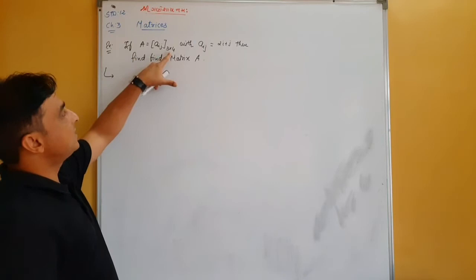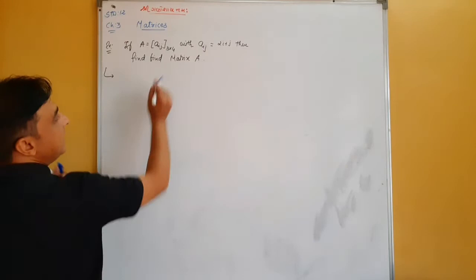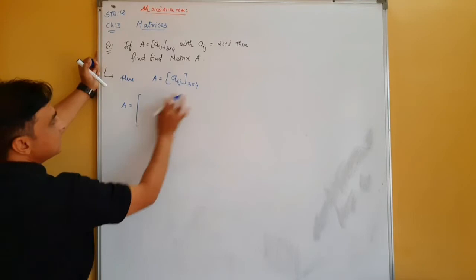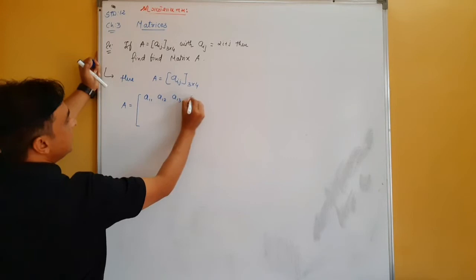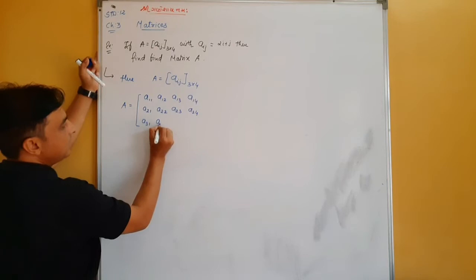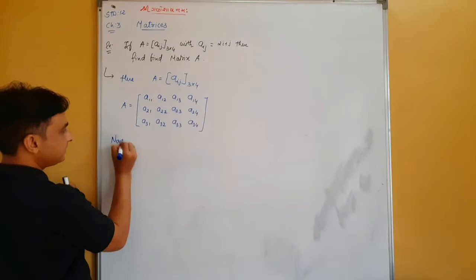Next example: if A = [aij] of order 3×4 — meaning 3 rows and 4 columns — and aij = 2i + j, find matrix A. So we need to find 12 elements: a₁₁, a₁₂, a₁₃, a₁₄ in the first row; a₂₁, a₂₂, a₂₃, a₂₄ in the second row; and a₃₁, a₃₂, a₃₃, a₃₄ in the third row.